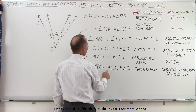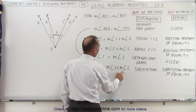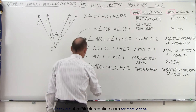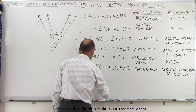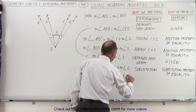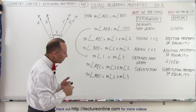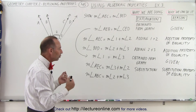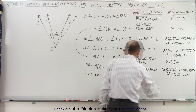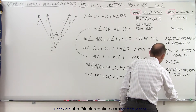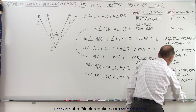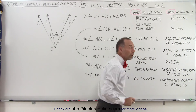I would like to reverse the order of those terms, so I can say the measure of angle AEC equals the measure of angle 2 plus the measure of angle 3. This is known as the commutative property in algebra — when you add two things together, you can reverse the order and still get the exact same result. The algebraic rule allows me to do that.